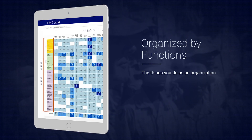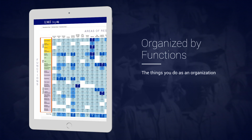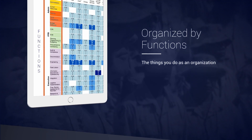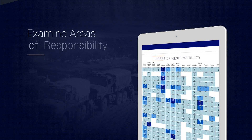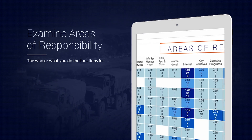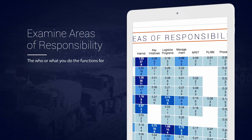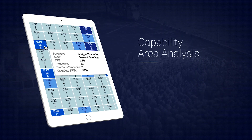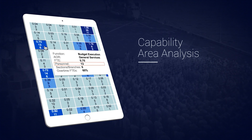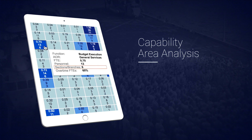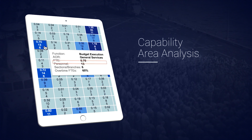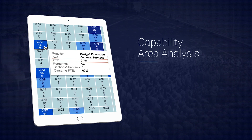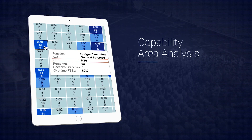You can see the functions — the things you do as an organization — on the left: training, travel prep, budget execution. Across the top you'll see what we refer to as the areas of responsibility, or the who or what you do the functions for. In the provided example, you will see that for budget execution, they have 13 people sitting in six different parts of the organization doing about 0.7 FTEs, or full-time equivalent, worth of work within this specific capability area.